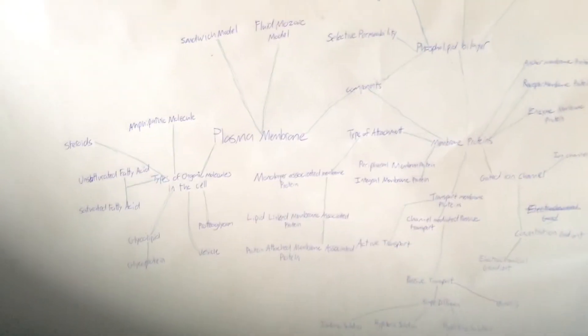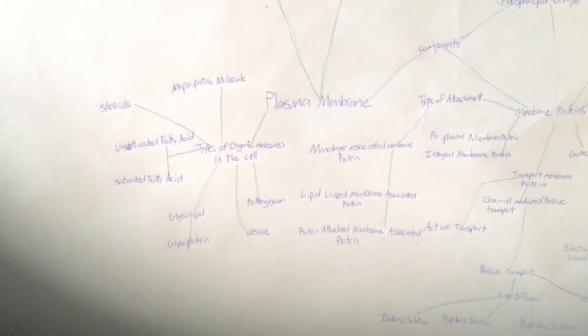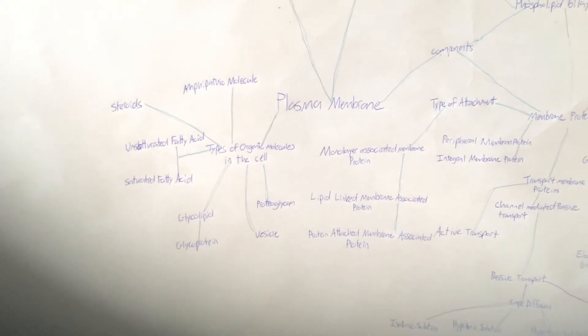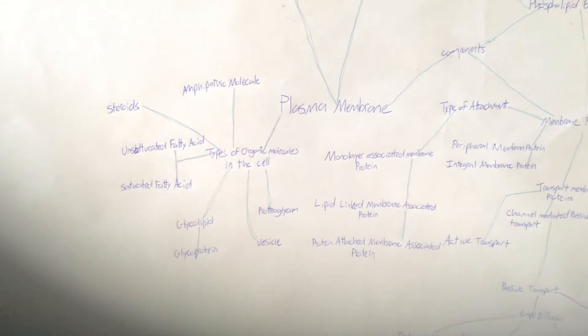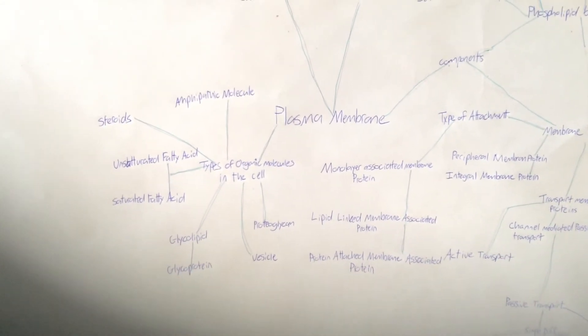And then we go back to plasma membrane. From there, we go to types of organic molecules in the cell. And then we go to amphipathic molecule, which refers to the lipids and anything that has a hydrophobic portion and a hydrophilic portion.